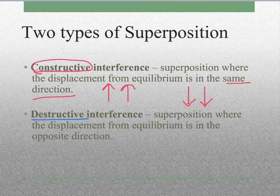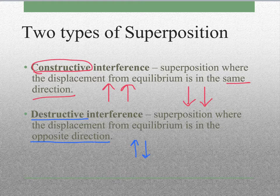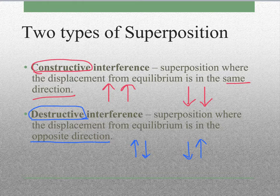Destructive interference, on the other hand, is when the displacement from equilibrium is in the opposite direction — so if one wave goes up and the other is going down, or if one wave is going down and the other goes up. These both give us destructive interference, which corresponds to the dark spots where we didn't see anything in the last picture.